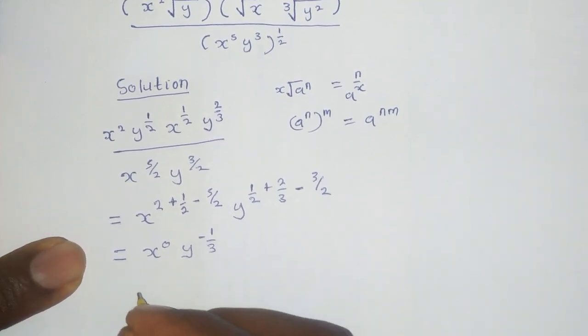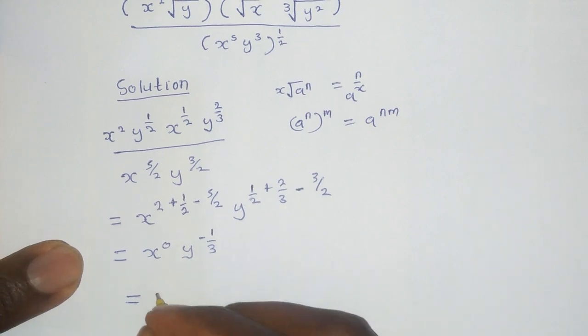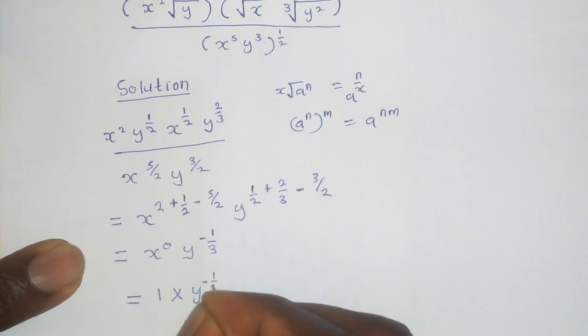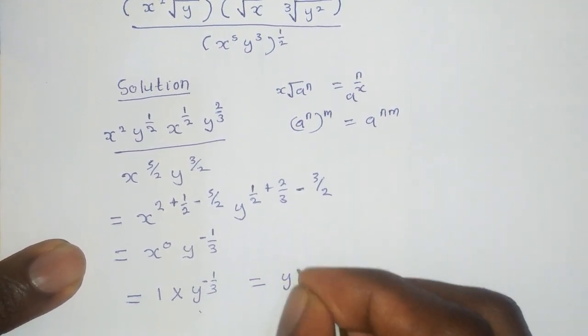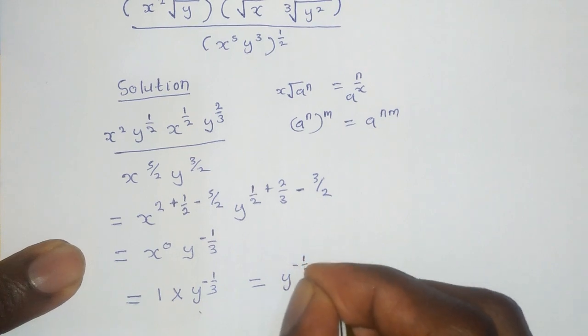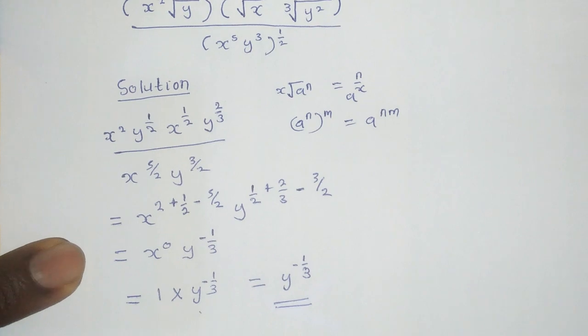And any number raised to 0 is 1. That will be 1 multiplied by y raised to negative 1 third. And this gives us y raised to negative 1 third. And that becomes our final solution.